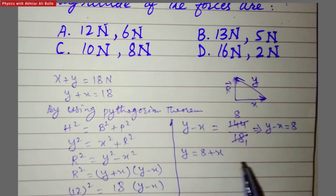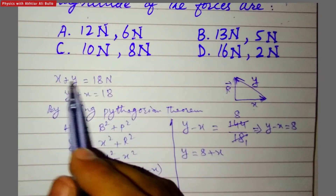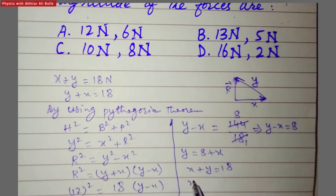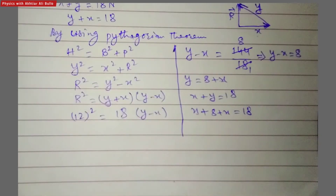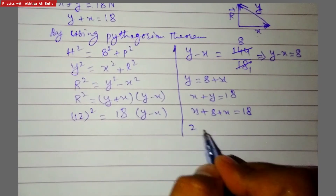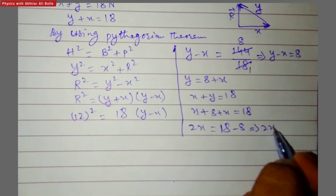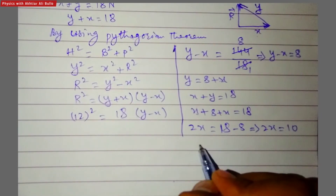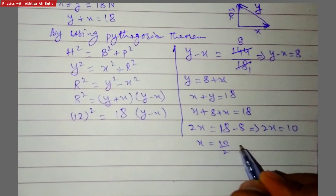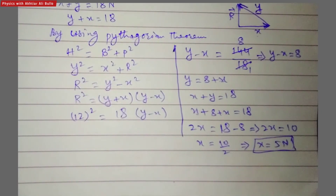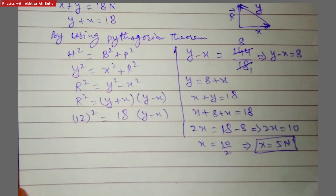Since y minus x equals 8, we get y equals 8 plus x. Substituting into x plus y equals 18 gives x plus 8 plus x equals 18, so 2x equals 10, therefore x equals 5 newton.